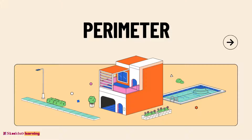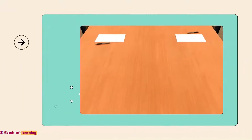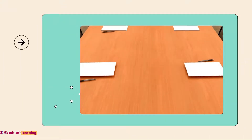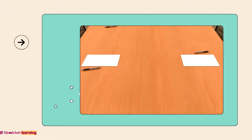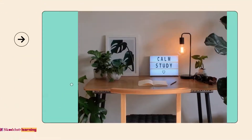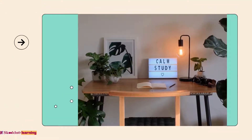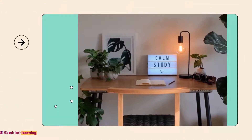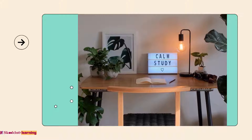Perimeter. The distance around a plane shape is referred to as its perimeter. The sum total of the lengths around a plane shape is also known as its perimeter.